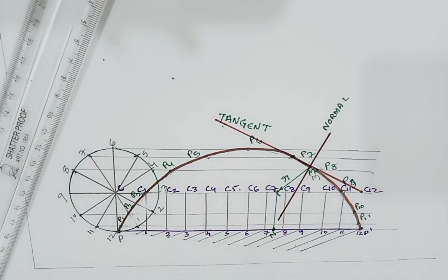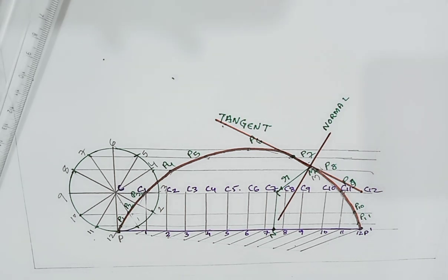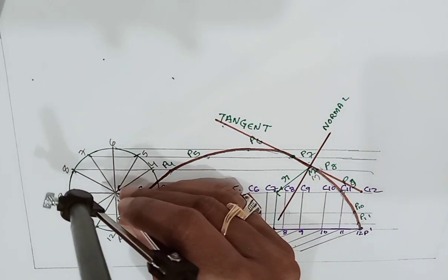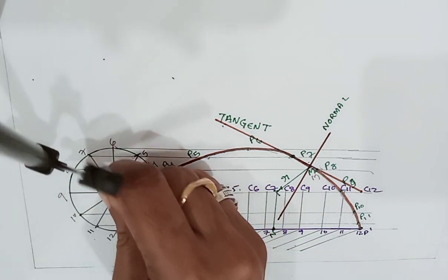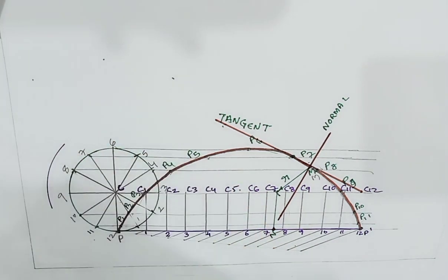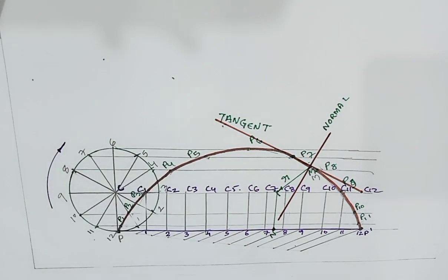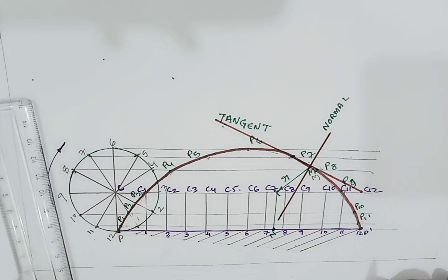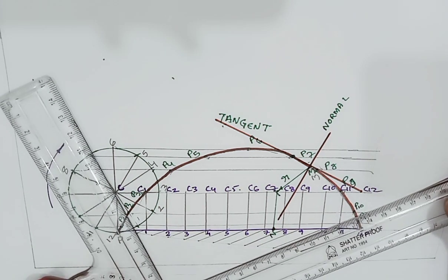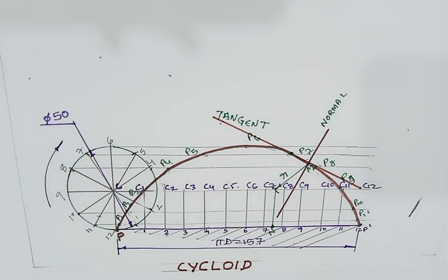After that, show the direction in which the rolling circle rolls — in the clockwise direction. Finally, add the dimensioning of the rolling circle as well as the length of the directing line. That completes the construction of the cycloid.